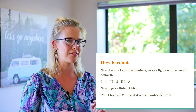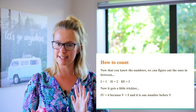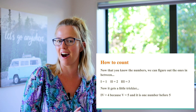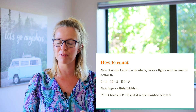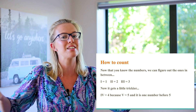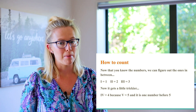IV is the number four because V means the number five. And if we put an I in front of the V, that means one number before five. So IV means one number before five, which is four. See what I mean about being tricky?